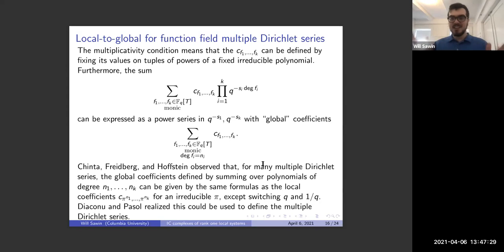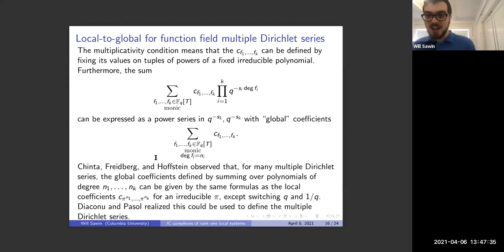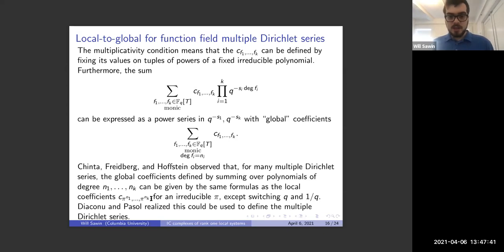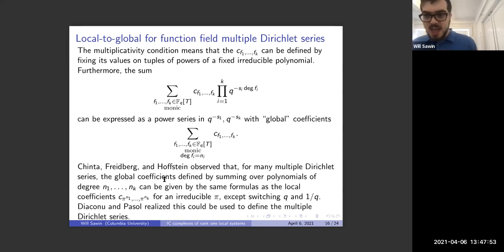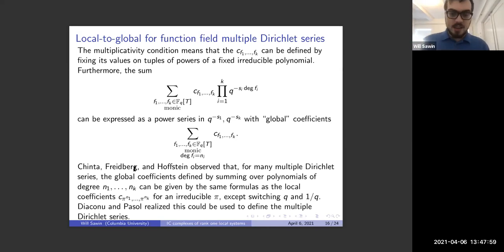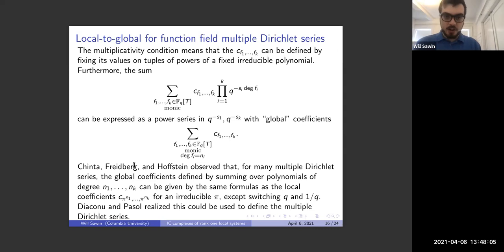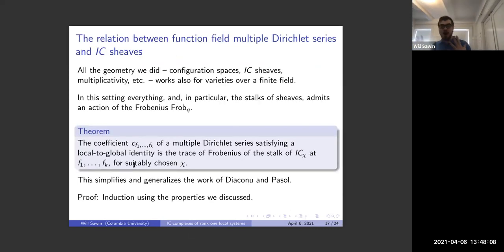Chinta, Friedberg, and Hoffstein would express this not in terms of Poincaré duality but as a numerical statement; then Diaconu and Pasol used this to give a new definition of multiple Dirichlet series — which were previously defined differently — because this property uniquely characterizes them. This corresponds exactly to the Poincaré duality and local-global principle we saw earlier.